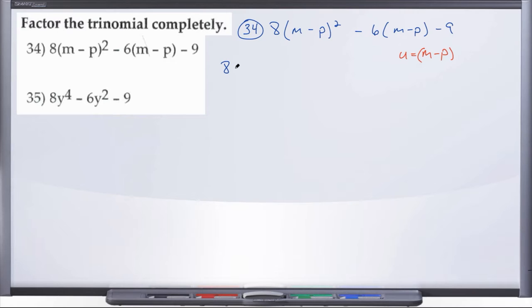So we have 8u squared minus 6u minus 9. And now we have a trinomial that looks just like some of the other ones we've been dealing with earlier on in the review series.